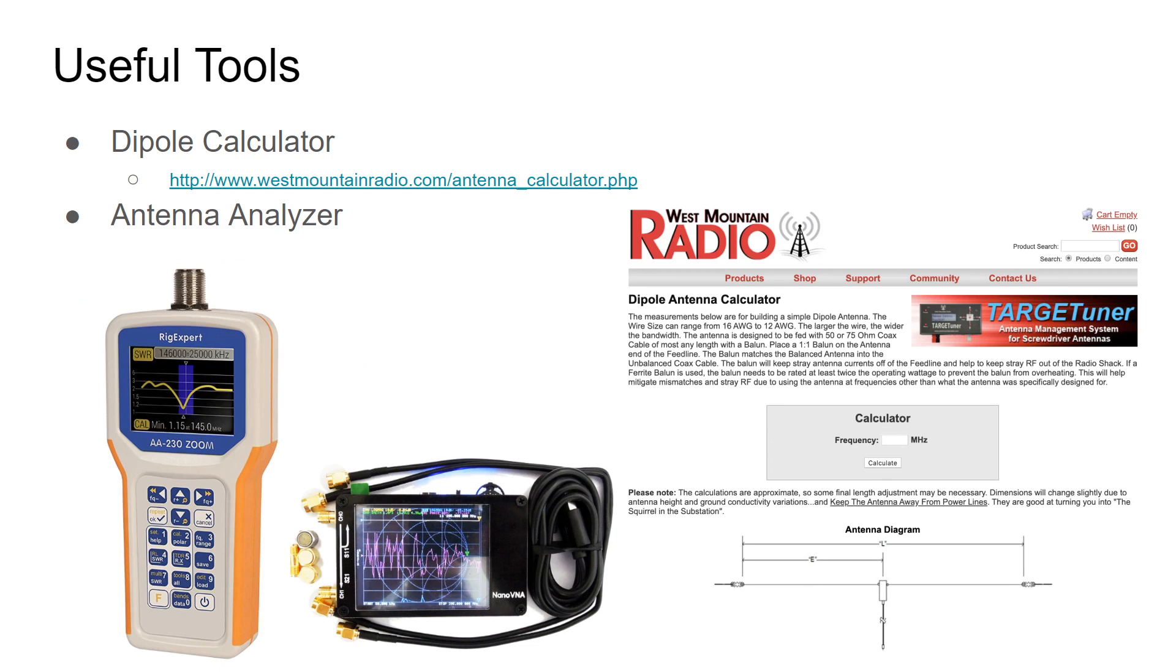So, when you buy a dipole or you build a dipole, there's some useful tools that I wanted to point out. The first is a dipole calculator, and the one that I use is West Mountain Radio. And, it takes that formula and throws it out the window. You don't need it. So, you just type in the frequency in the calculator, you hit the calculate button, and it gives you the overall length and the element length of your antenna. So, it's pretty simple, but it's nice to know how that is calculated in the event that you have to do it by hand.